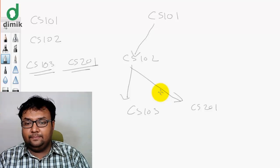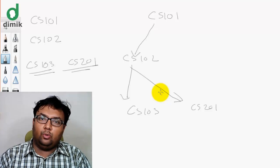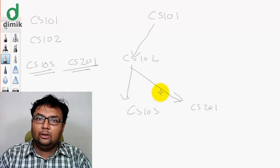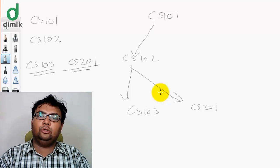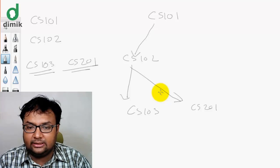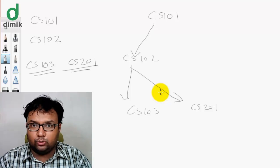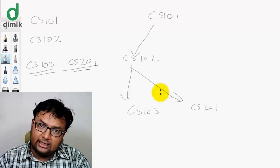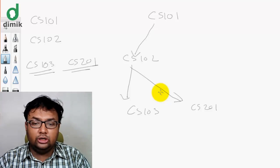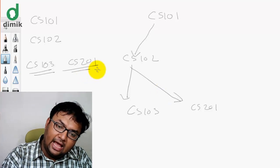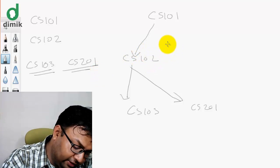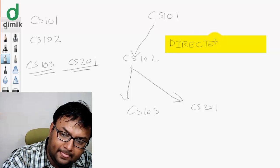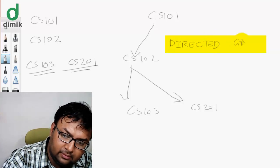101 connects to 102, and 102 connects to 103. Notice that each edge has 1 direction. 101 connects to 102 does not mean 102 connects back to 101 — if it did, you would have a deadlock. This is an example of a directed graph, where every edge has a specific direction indicated by an arrow.